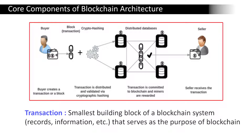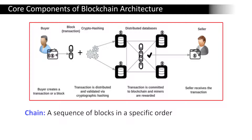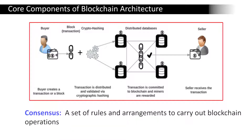A transaction is the smallest building block of blockchain systems, such as records, information, etc., serving as the purpose of the blockchain. A block is a data structure used for keeping a set of transactions distributed to all nodes in the network. A chain is a sequence of blocks in a specific order. Miners are specific nodes that perform the block verification process before adding anything to the blockchain structure. Finally, the consensus protocol is a set of rules and arrangements to carry out blockchain operations smoothly.